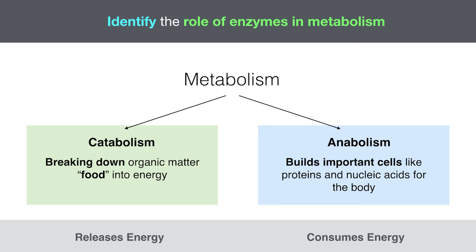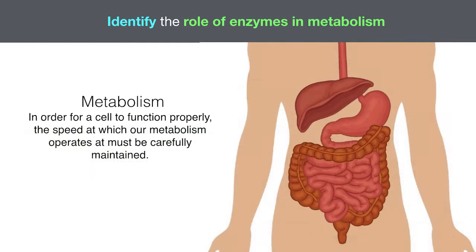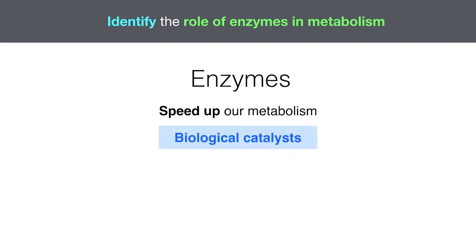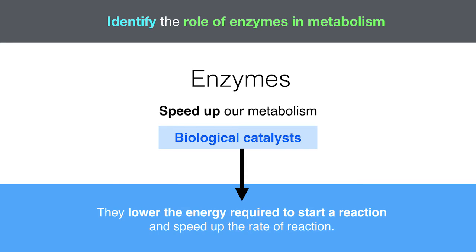The catch with our metabolism is that it is actually incredibly slow, regardless of what all skinny people say. In order for a cell to function properly, the speed at which our metabolism operates must be carefully maintained. This is where the role of enzymes comes in. Enzymes help speed up our metabolism and are known as biological catalysts. Catalysts lower the energy required to start a reaction and speed up the rate of reaction — they're like steroids but without all the bad stuff.